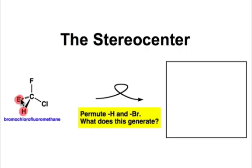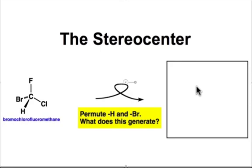So let's exchange the bromine and the hydrogen on the stereocenter in bromochlorofluoromethane. We'll draw this structure with the fluorine, carbon, and chlorine all on the plane, and then we'll have the bromine coming out, and we'll have the hydrogen going back.